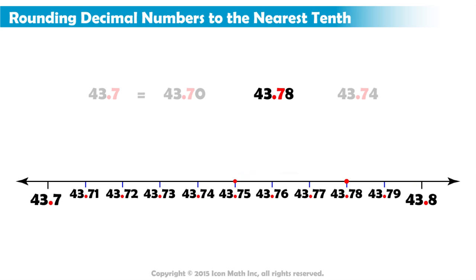As you can see, the number crosses the midpoint 43 and 75 hundredths. That means we are closer to 8 tenths. So we round up the number by changing our tenths value to 8 tenths. And the number becomes 43 and 8 tenths.